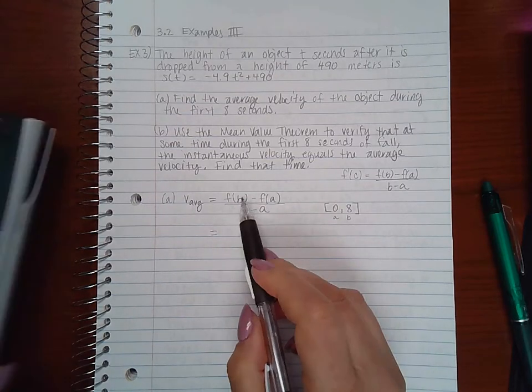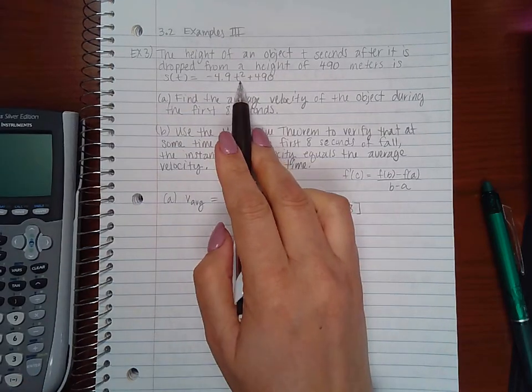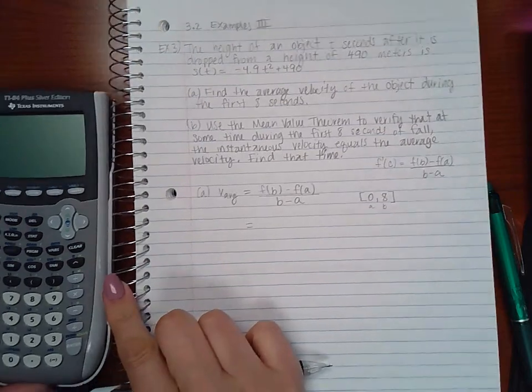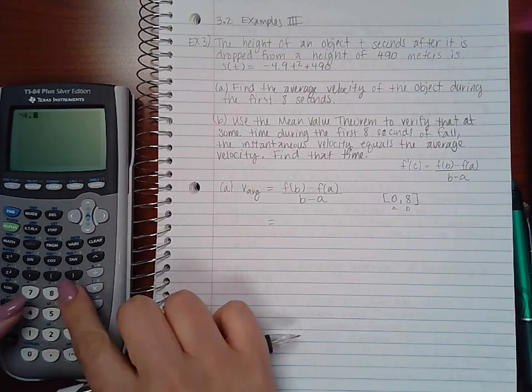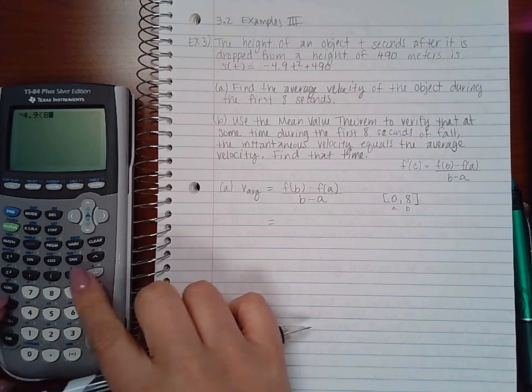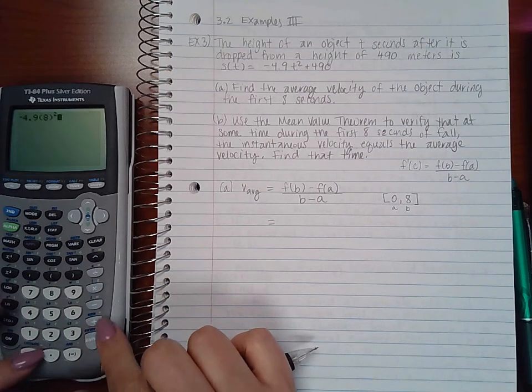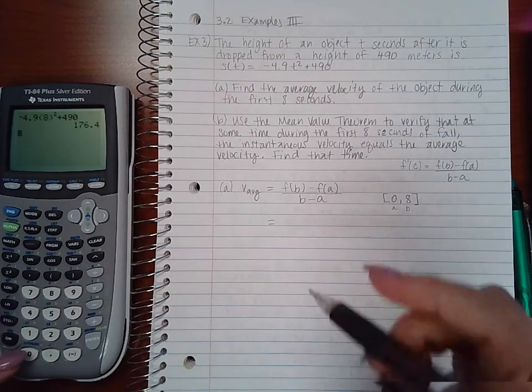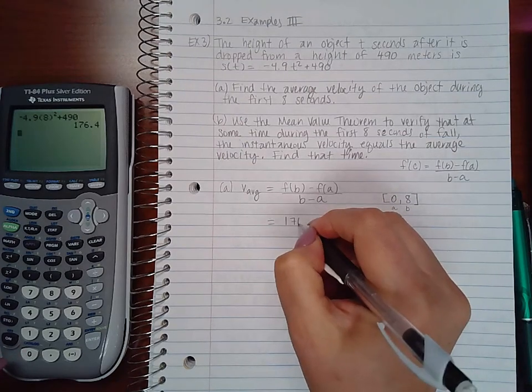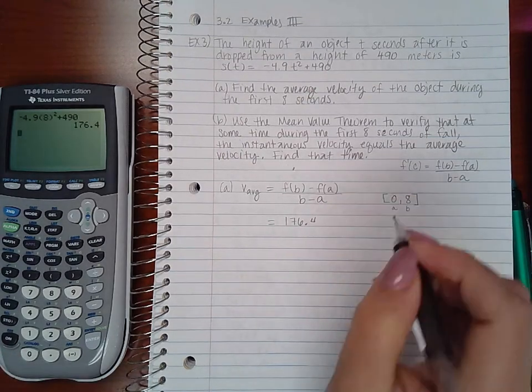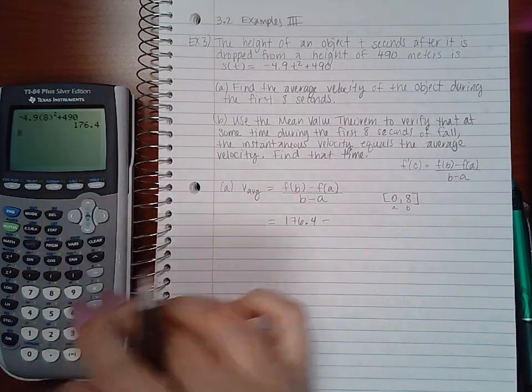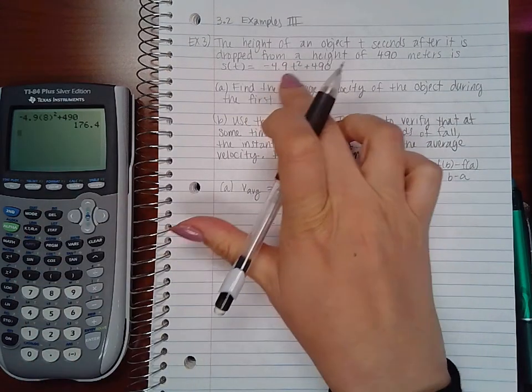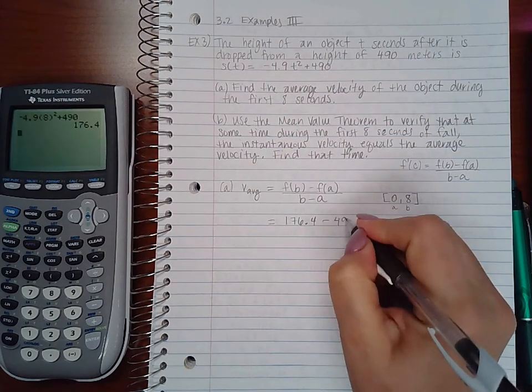So f(b) means I would plug in 8 into my original function. So here's my calculator: -4.9 times 8² + 490 is going to be 176.4. And then if I plug in 0, this is going to all be 0, which will leave me with just 490.